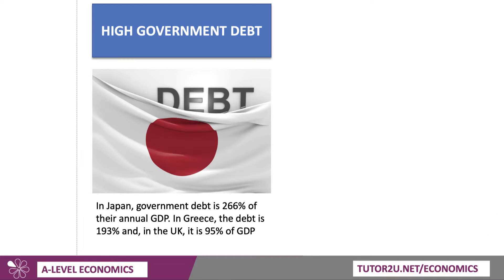Two countries where national debt is really high. First of all, Japan, where government debt is 266% of their annual GDP. And Greece, where the debt is closing in on 300% of their national income. In the UK, we have a £2 trillion debt — that's around 95% of GDP.